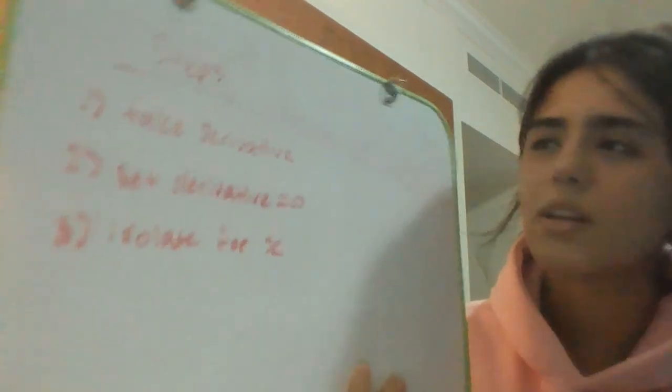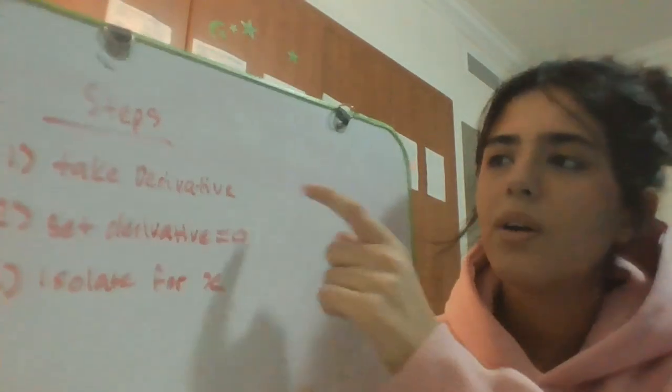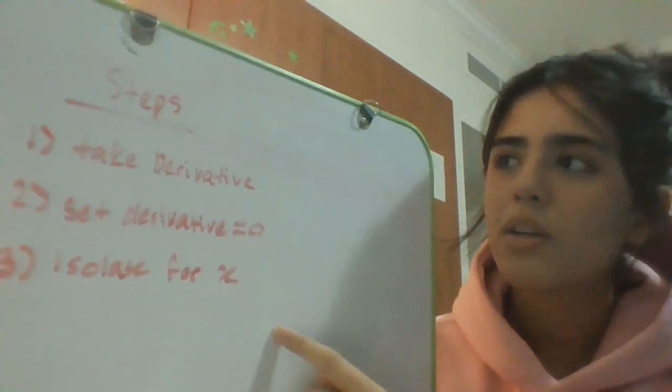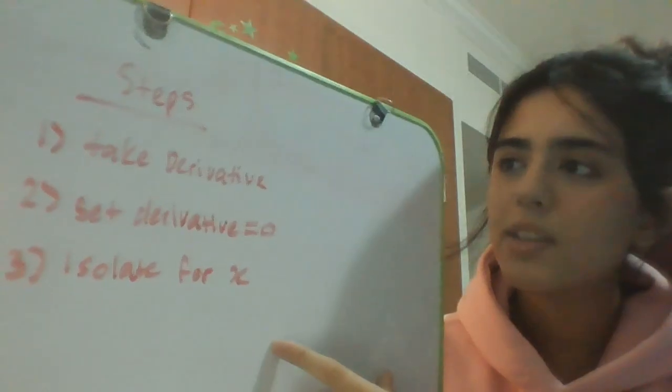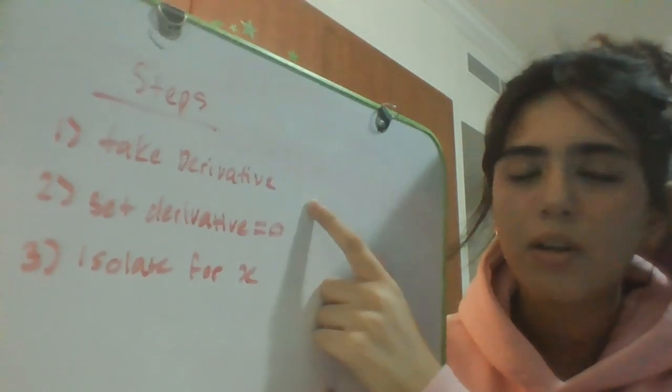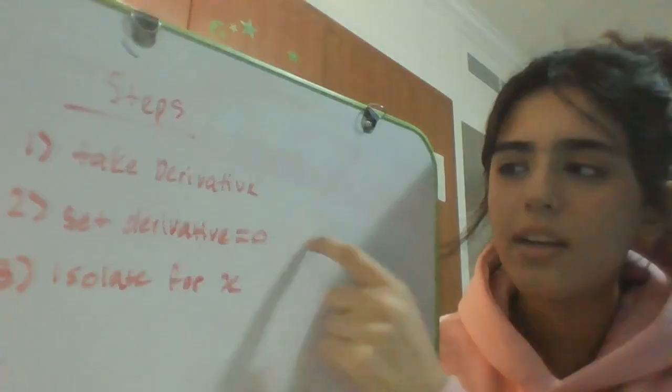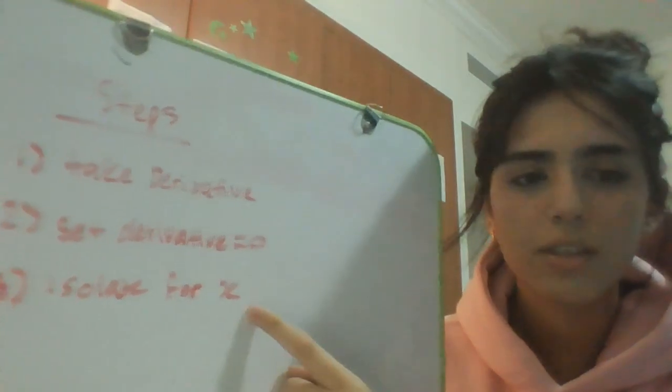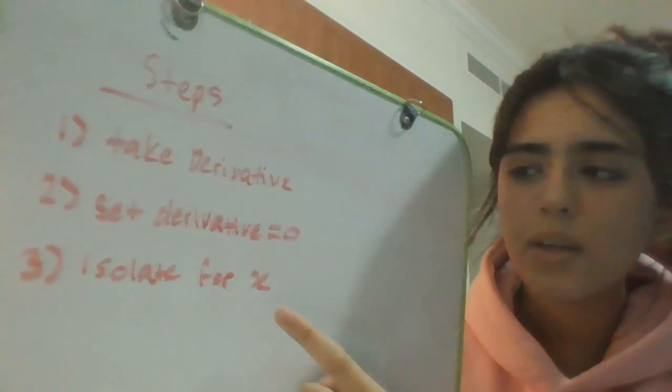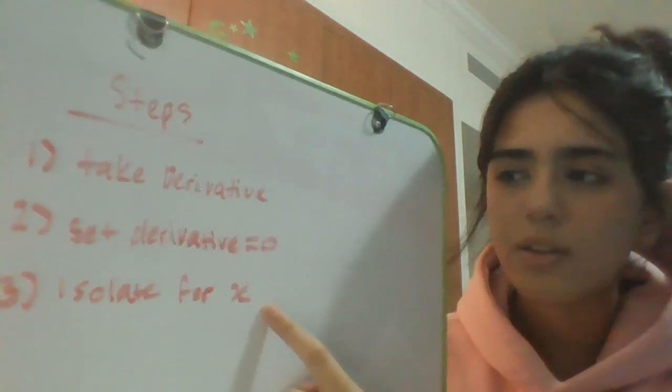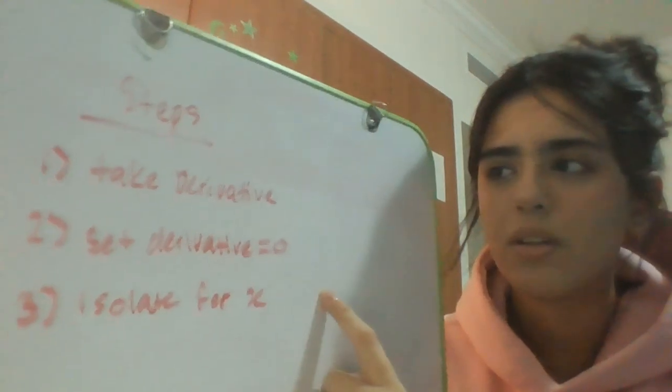It's very simple and only has three steps. You'll be given a function, the first step is to take the derivative. When you take the derivative, you're going to set it equal to zero and then isolate for x. Whatever value you get for x will be your critical number. So let's start on examples.